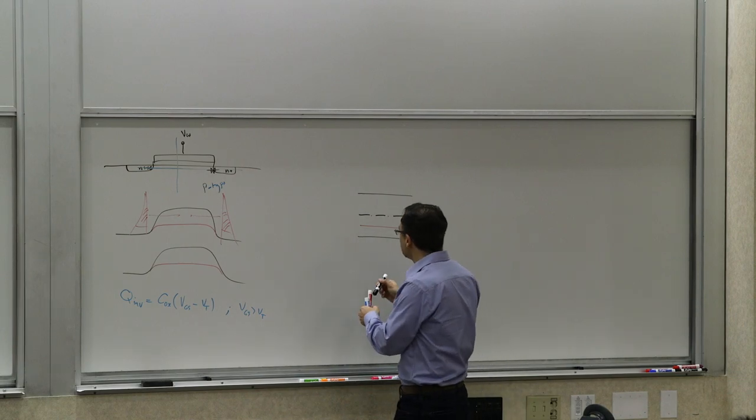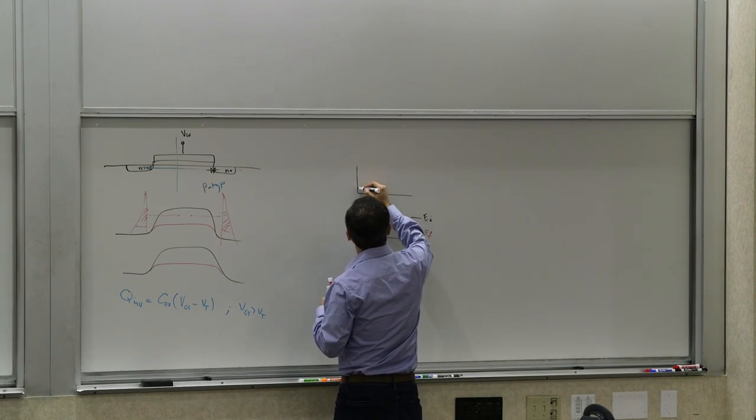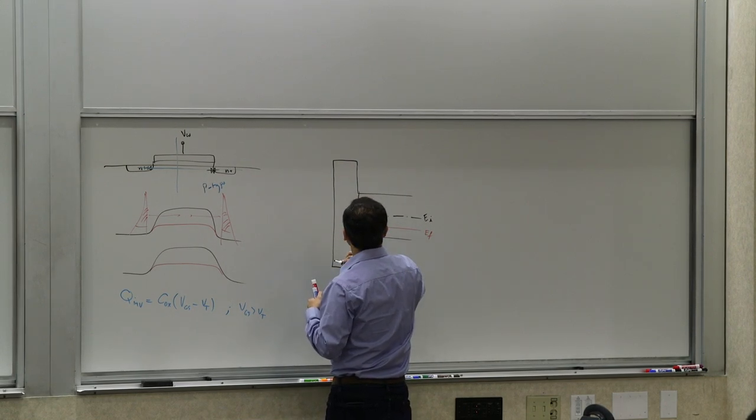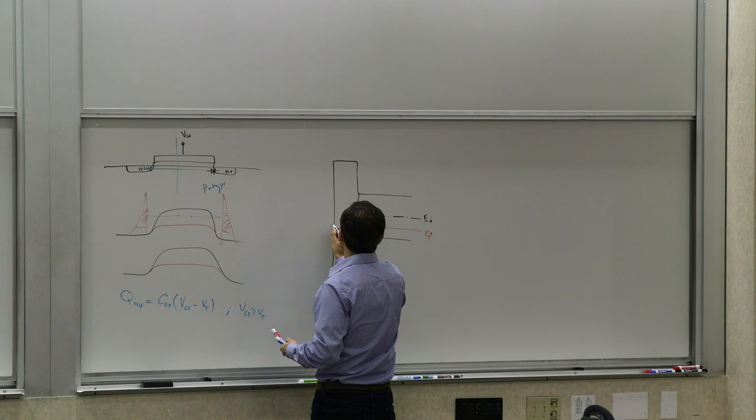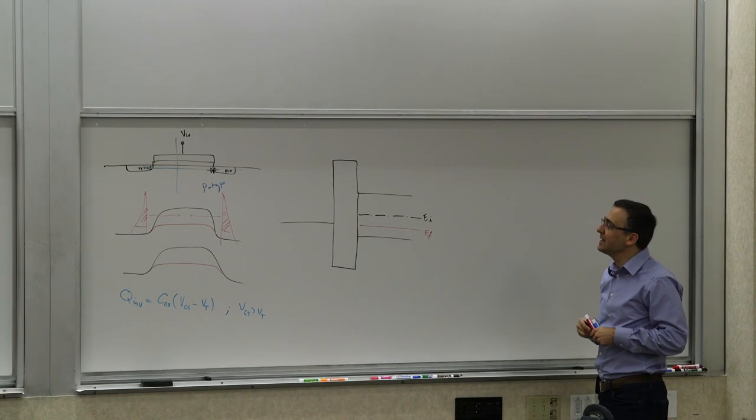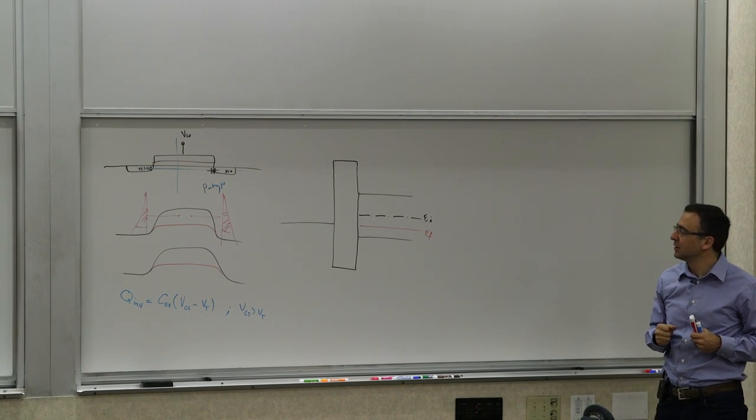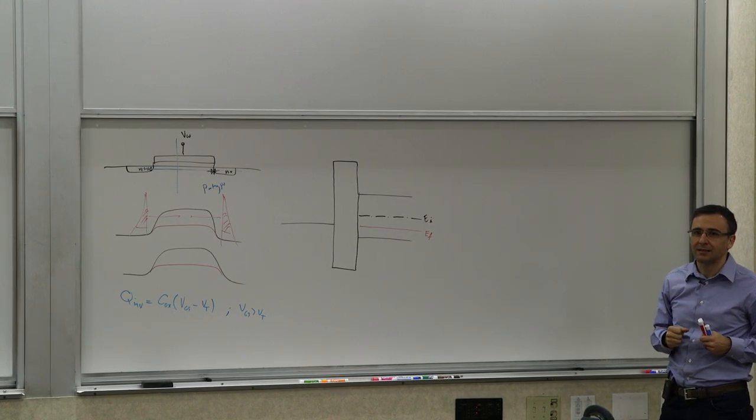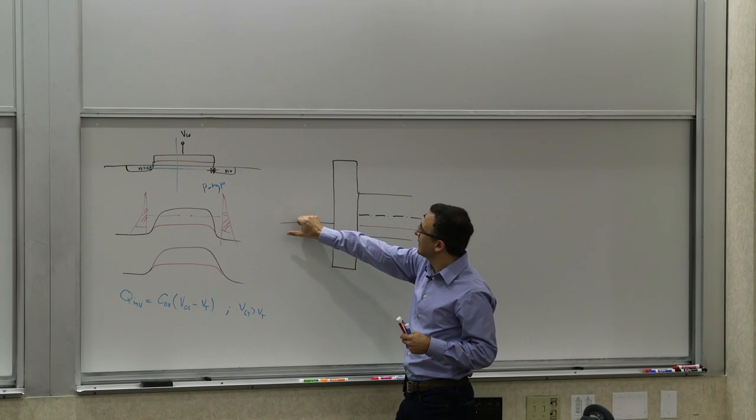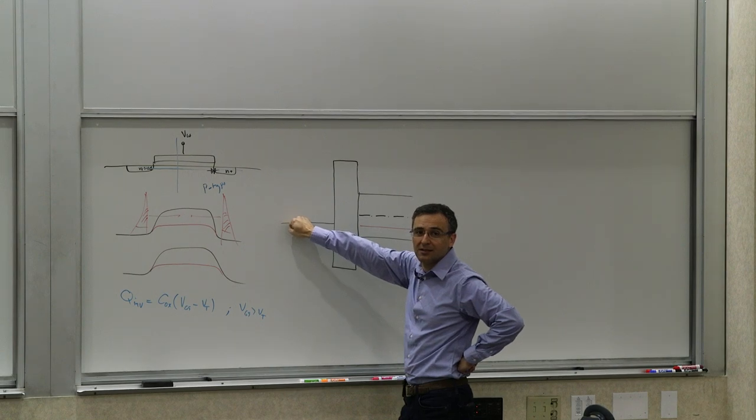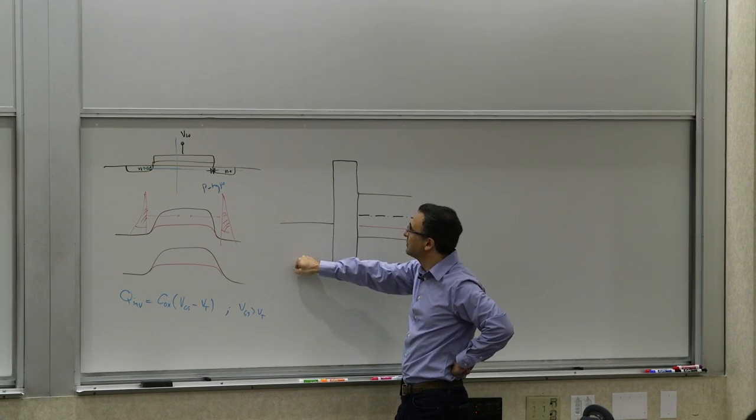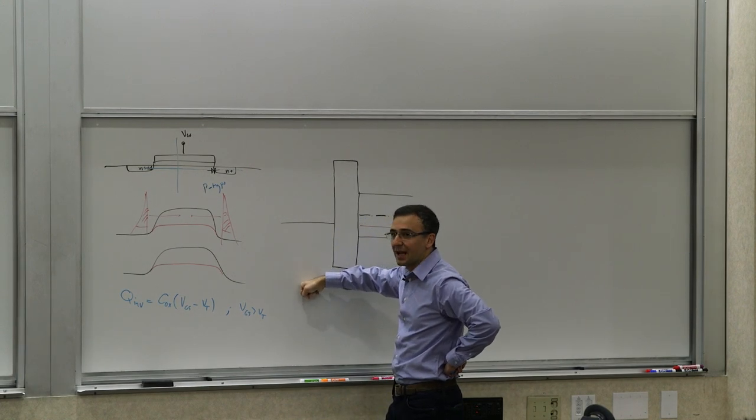And then you have the flat band condition initially. You have this insulator, your oxide, going across here. And then you have your metal gate. Now, if I'm applying a positive voltage to the gate, what is it going to do? Applying a positive voltage to the gate, if you think about it, is going to push it down. Because this is a positive voltage at an energy level, so it's going to push it down.